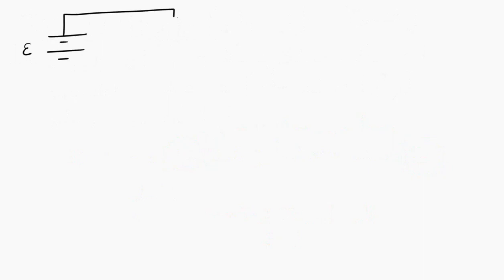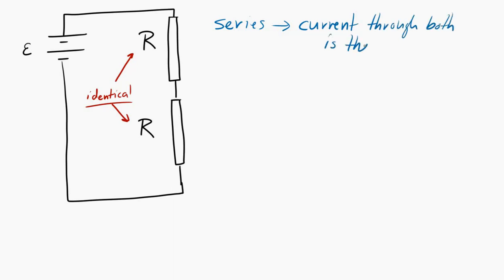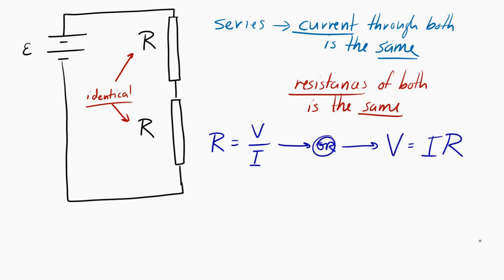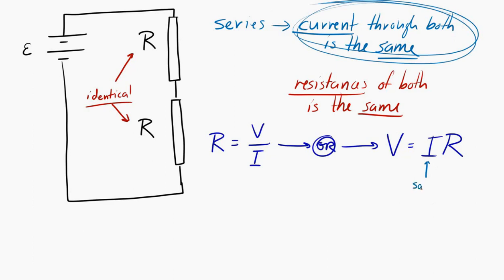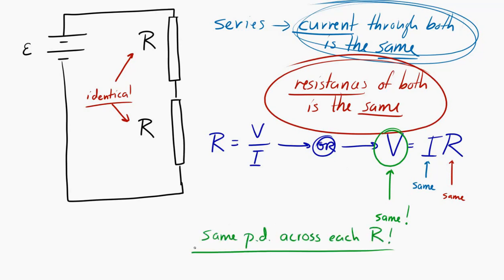Let's draw a battery providing an EMF and connect it to two identical resistors. This is a series circuit, so the current through both resistors must be the same. They have the same resistance, and if we look at V equals IR, same current and same resistance means they will both have the same potential difference. So this circuit takes the EMF provided by the battery and splits it into two equal parts.